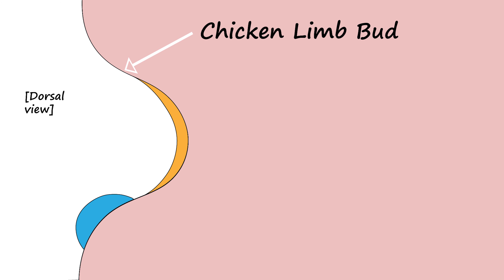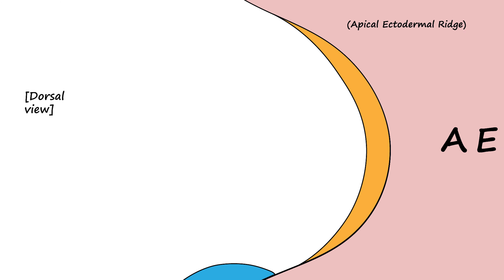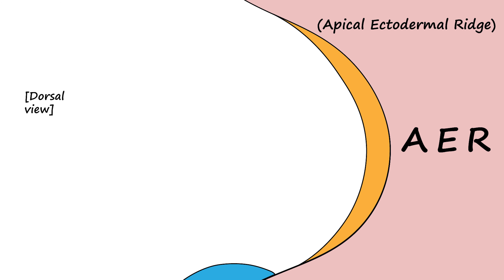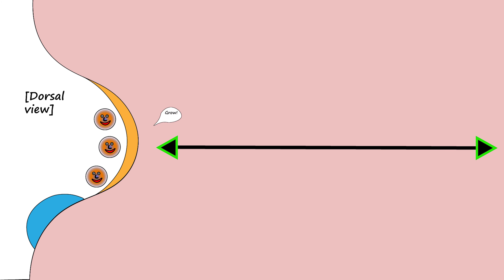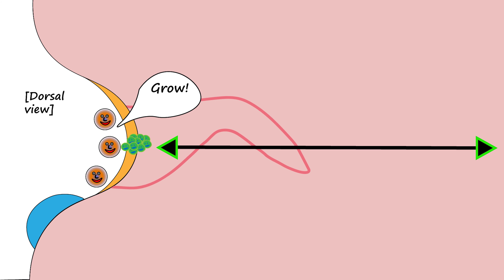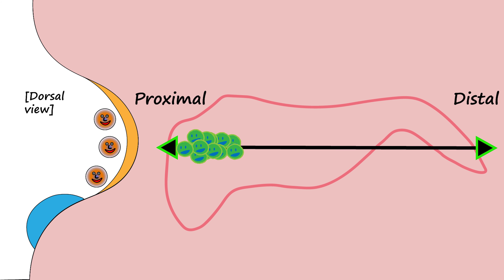First, talking proximal-distal: a region on the tip of the limb bud known as the AER produces a molecule on a concentration gradient.